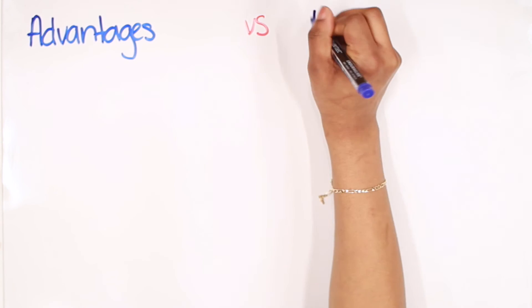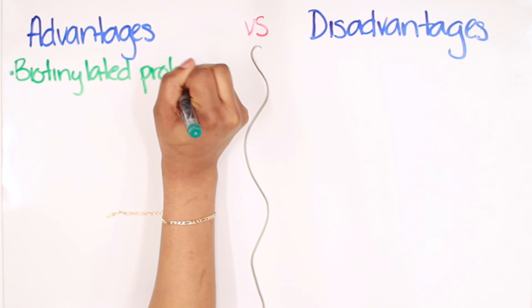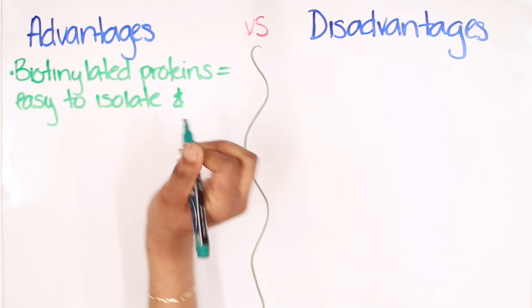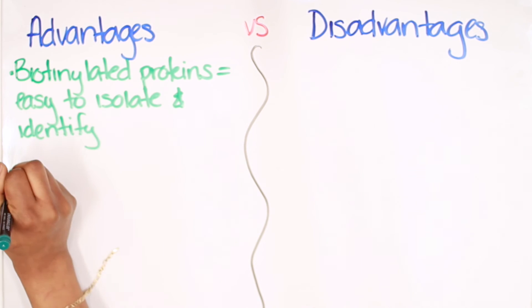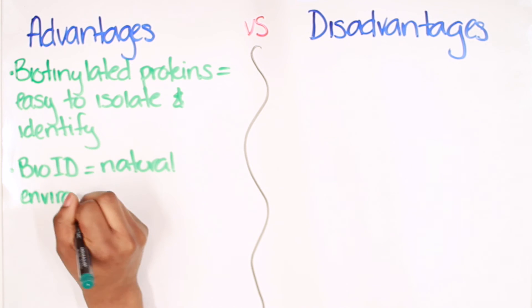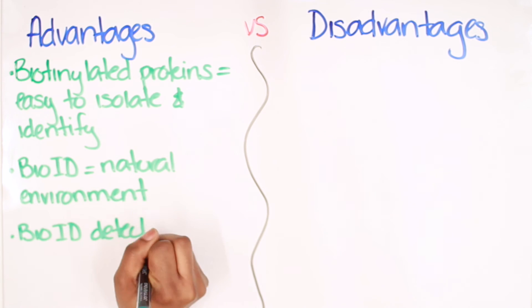BioID has its advantages. Biotinylated proteins are practically only going to be proteins that were in proximity or interacting with the bait. This makes it easier to identify them later on. BioID allows both the bait and the prey to be in their natural environment during their interaction. This reduces the risk of environmental incompatibility that might occur if you were using another method. BioID is able to detect weak transient interactions. Additionally, BioID is also able to detect a wide variety of baits.